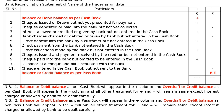Note 2: Credit balance as per passbook will appear in the plus column, and overdraft or debit balance as per passbook will appear in the minus column. All other treatment for positive and negative items will remain the same, except interest charged or allowed by the bank, which must be dealt with carefully.